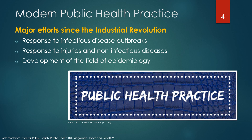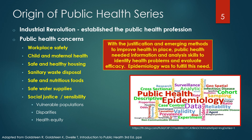Three major public health practice efforts that developed since the Industrial Revolution included response to infectious disease outbreaks, response to injuries and non-infectious diseases, and the development of the field of epidemiology. We've seen in the first three parts of this Origin of Public Health series that the public response to the health problems brought about by the Industrial Revolution laid the foundation for public health as a profession in Britain and other countries in Europe and the Americas, and resulted in public health concerns for workplace safety, child and maternal health, safe and healthy housing, sanitary waste disposal, and safe and nutritious food and water. It also established public health social justice sensibility concerns for vulnerable populations.